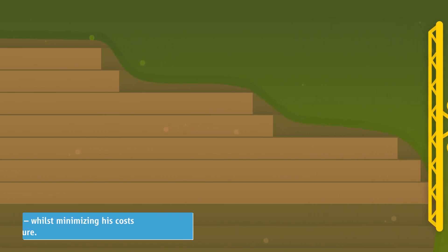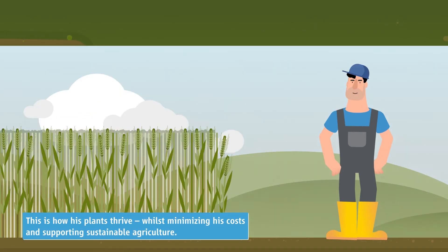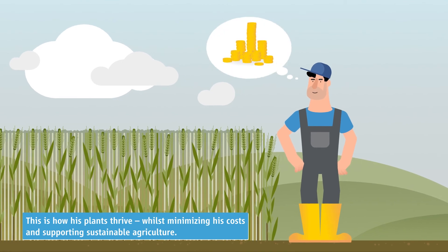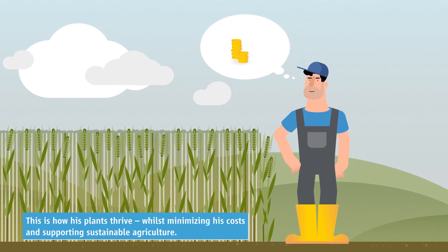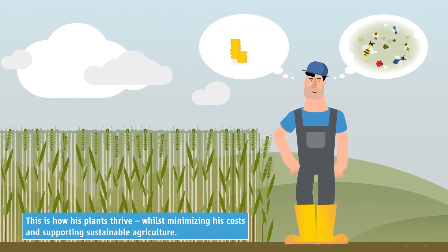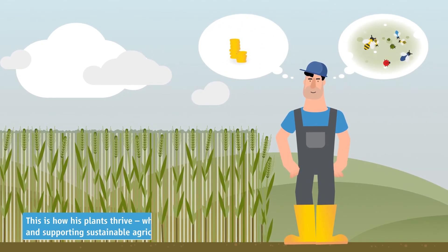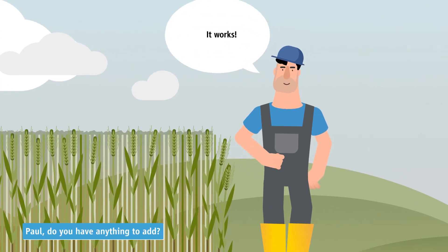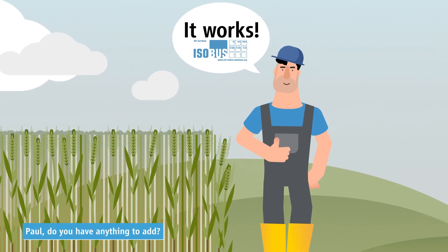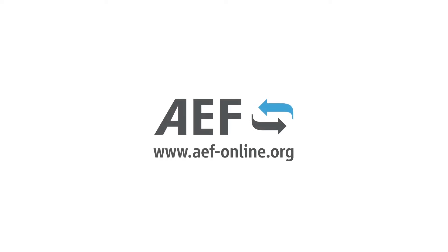This is how his plants thrive, while minimizing his costs and supporting sustainable agriculture. It works. You want to work as smart as Paul? AEF Online dot org.